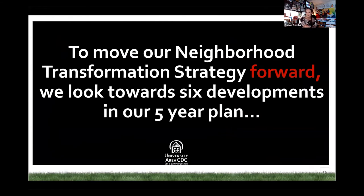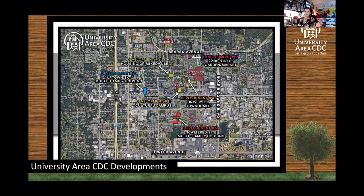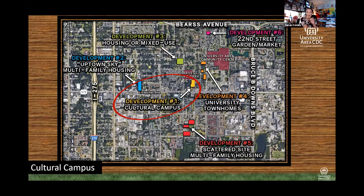I'm excited to share our neighborhood transformation strategy showing six redevelopment projects we're trying to accomplish in the next five years. This map shows our primary service area — where we're specifically focusing on measuring the impact of our innovative solutions. Harvest Hope Park is right in the middle, as it's a clustered approach to community development, starting from the inside out, and then you can see all the developments surrounding it. We're working with many different cities throughout the US, showing them our work and having them adopt and adapt it to fit their own communities.